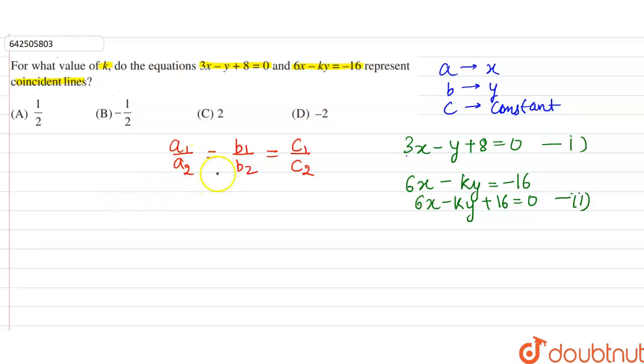So according to this, a1 is 3, so 3 divided by a2 which is 6. b1, the coefficient of y, is minus 1, and the coefficient of y in the second equation is minus k.